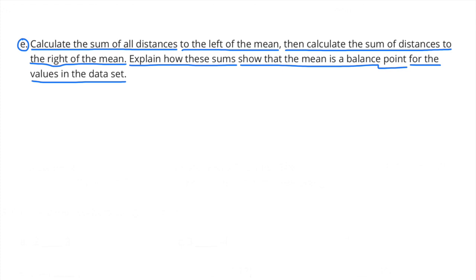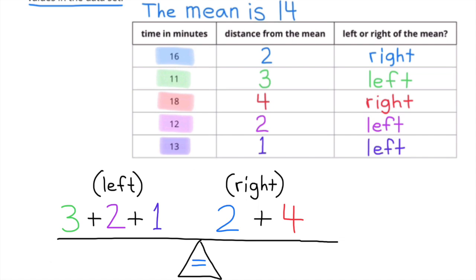Part E: Calculate the sum of all distances to the left of the mean, then calculate the sum to the right of the mean. Explain how these sums show that the mean is a balance point for the values in the data set. I made a little balance — a scale, or a teeter-totter.